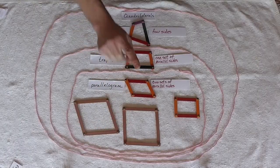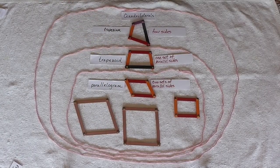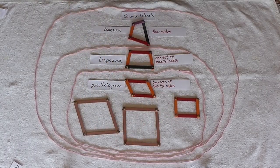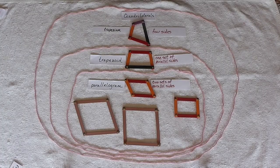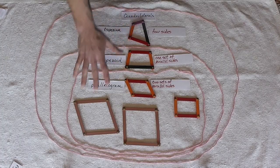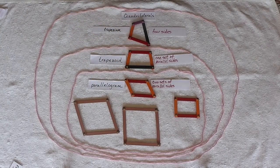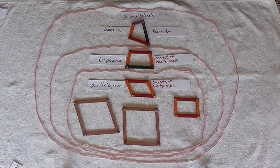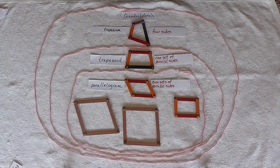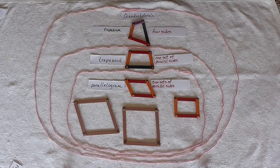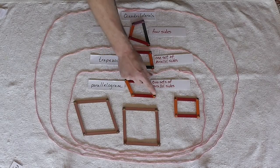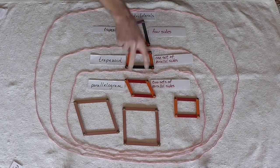Everything in here is a trapezoid because everything in here has at least one set of parallel sides. However, this cannot be a parallelogram. Why? Because a parallelogram has to have two sets of parallel sides. Here's one set. Here's one set. Here's the other set.